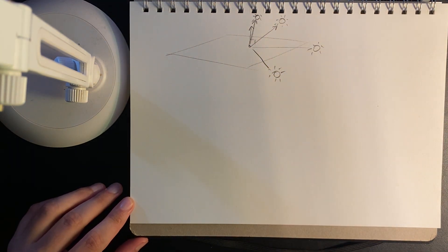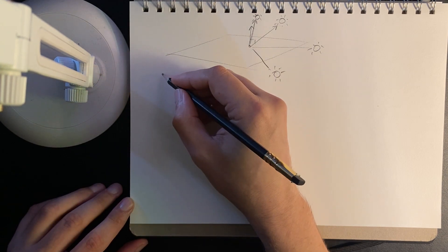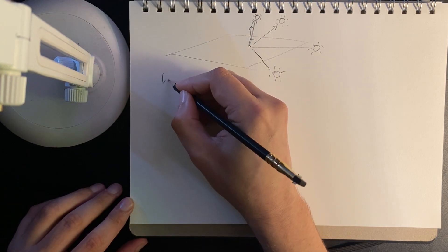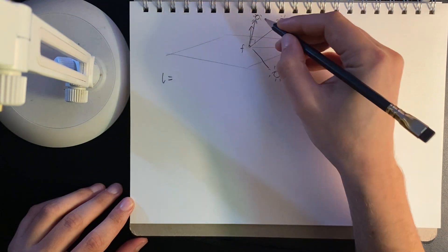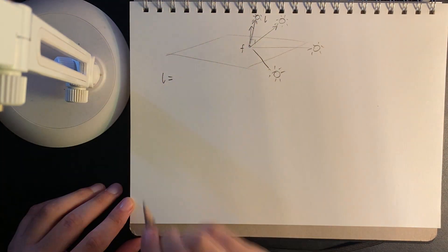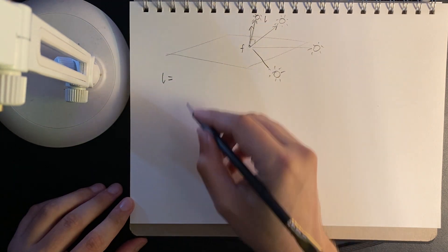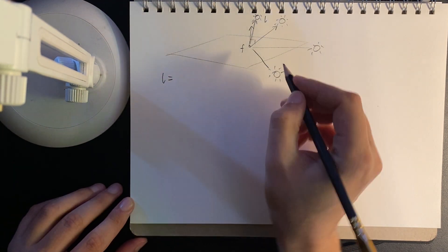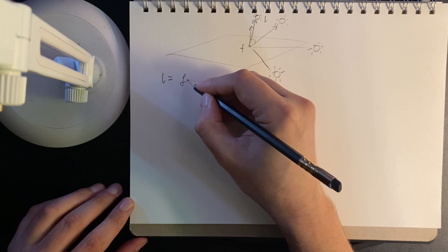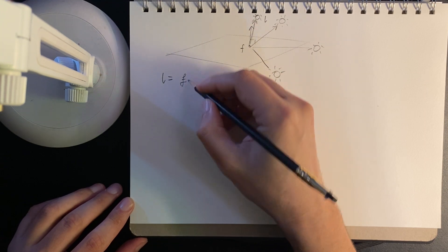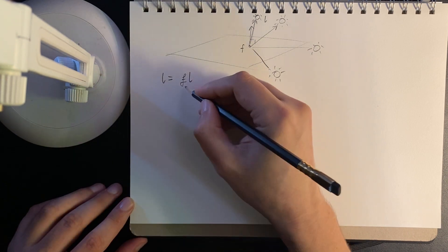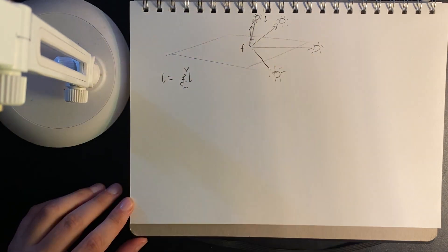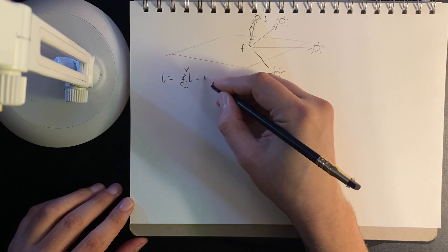So what we would say is, okay, the diffuse light amount would be, if we have our fragment f and our light l, we have the dot product of the direction from f to l normalized, dot product of that with the normal.